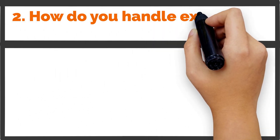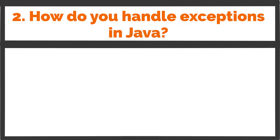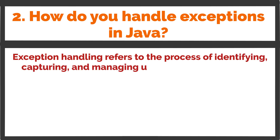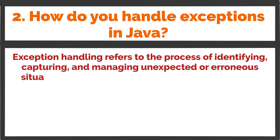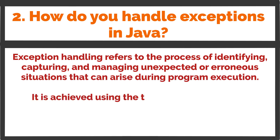Question 2: How do you handle exceptions in Java? Exception handling refers to the process of identifying, capturing, and managing unexpected or erroneous situations that can arise during program execution. It is achieved using the try-catch block in Java.